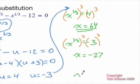So for this one, we're going to have two solutions, where x is either 64 or negative 27. And we're done.